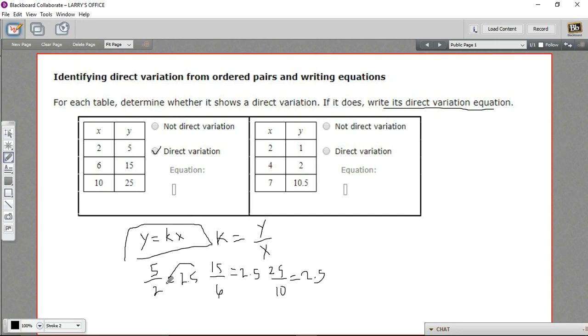The k part is this number we just figured out here. This is the constant of variation. So we would say y equals 2.5 times x, or you could write that as y equals 5 halves x.